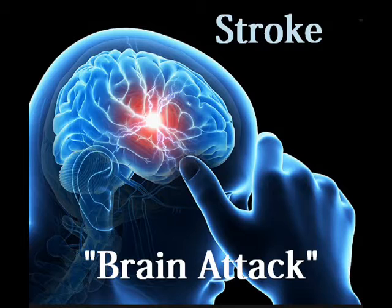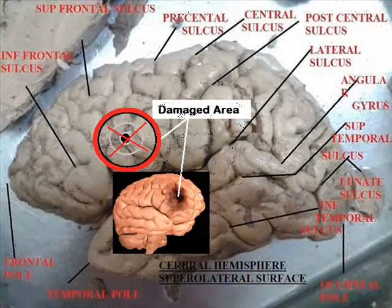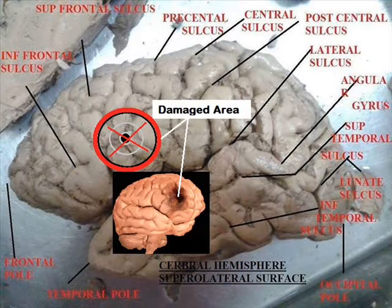All of us are familiar with heart attack, but what is a stroke? It is a kind of brain attack. It happens to anyone at any time when the blood flow to the brain is cut off, which leads to lack of oxygen and the cells begin to die. Stroke is the fifth leading cause of death, and every year about 15 million people are affected worldwide, out of which 5 million people die — accounting for about one death every four minutes.